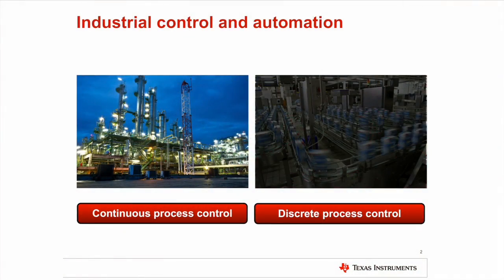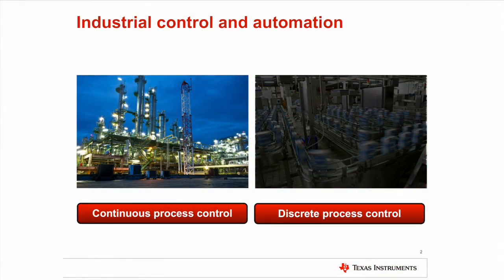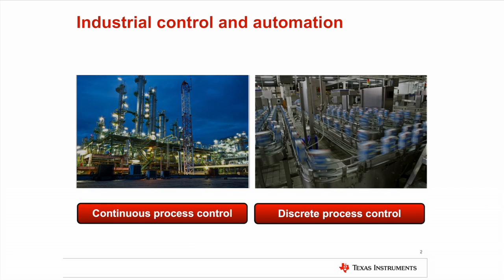We'll begin by looking at an industrial plant from a very high level. The image on the left shows an oil refinery where material makes its way through a number of control loops continuously — this is known as continuous process control. On the right you have a bottling plant or a pharmaceutical plant where material is flowing in discrete units, known as discrete process control.